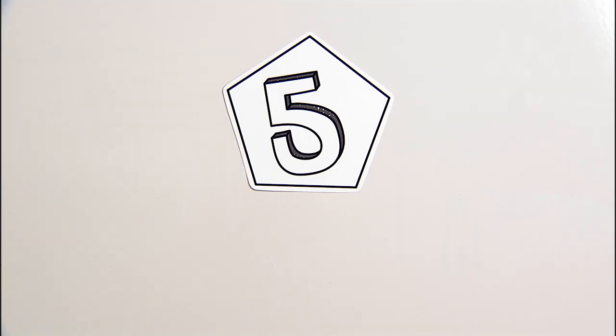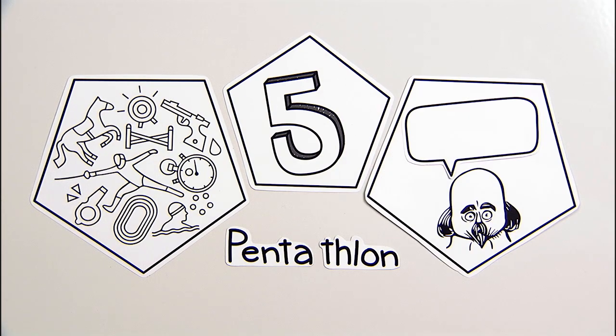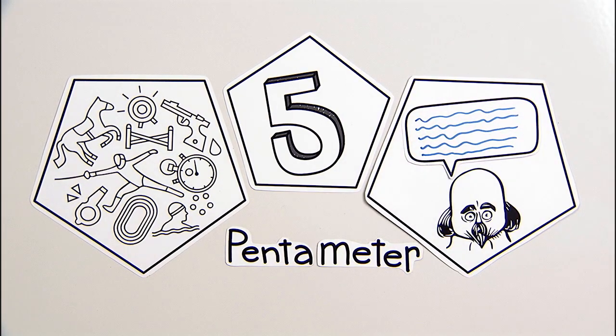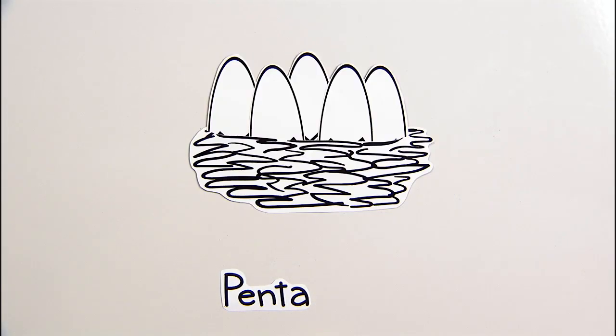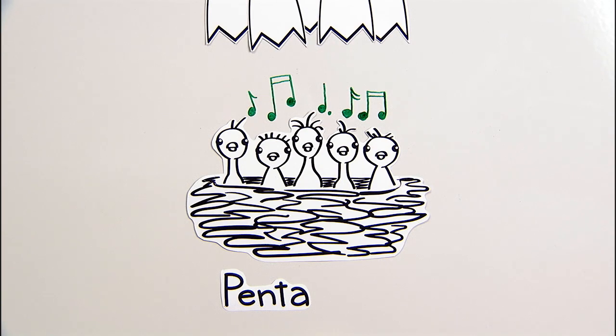A five-sided polygon is a pentagon. A pentathlon is an athletic competition with five events. And Shakespeare wrote in iambic pentameter, poetry with five lines. But we don't call a group of five musicians a pentatet, and five siblings born at the same time aren't pentoplates.